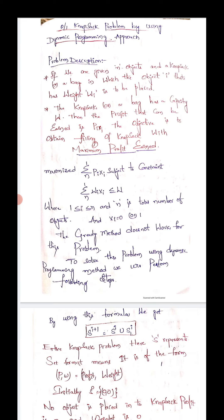The formula is: maximize the summation from 1 to N of Pi*Xi, subject to the constraint that the summation from 1 to N of Wi*Xi is less than or equal to W, where 1 ≤ i ≤ N. Here N is the total number of objects, Xi ∈ {0, 1}, Pi represents profits, Wi represents weights. The greedy method does not work for this problem.